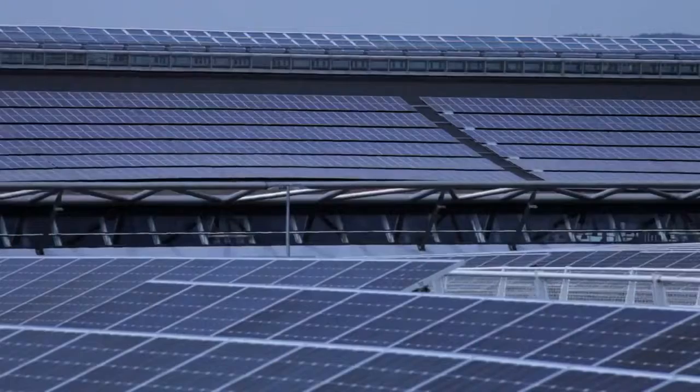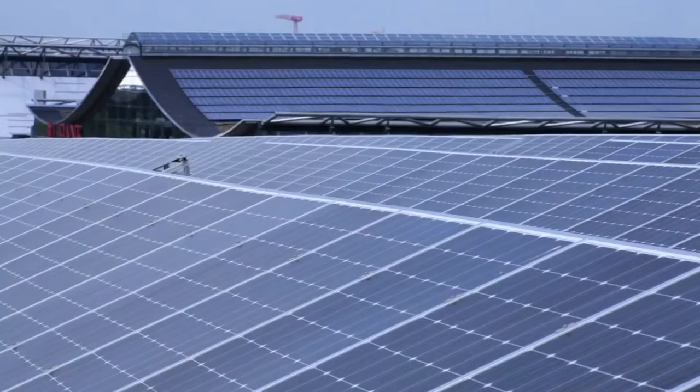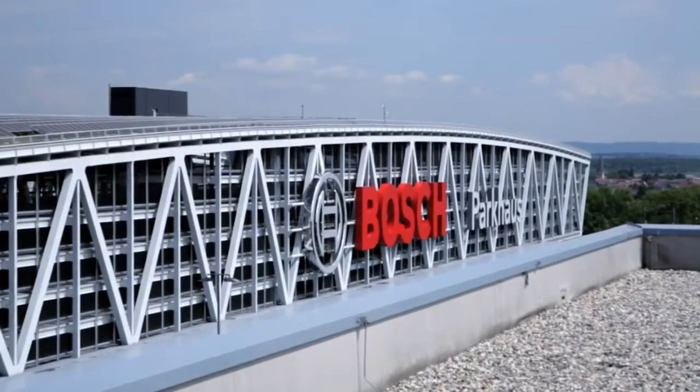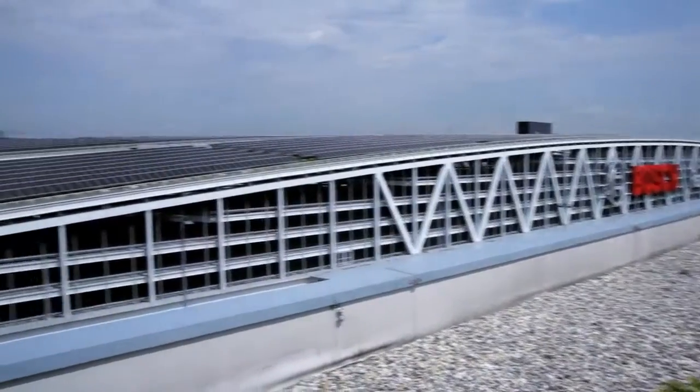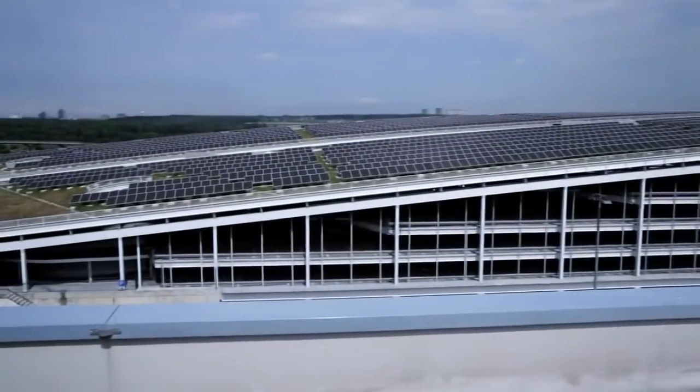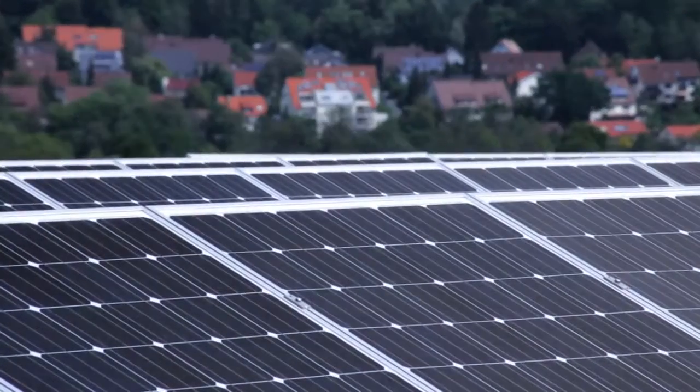One solar module contains 60 cells. When a number of modules are connected to one another, a solar power plant is created. And power is generated from the sun and the sand.